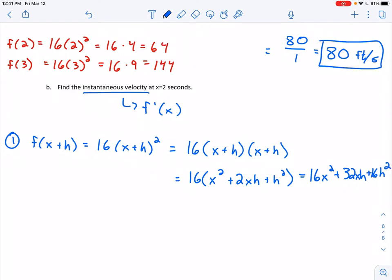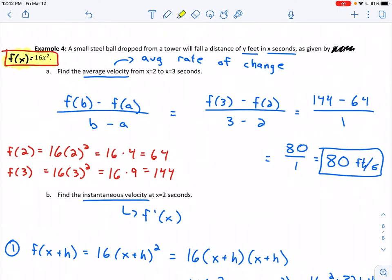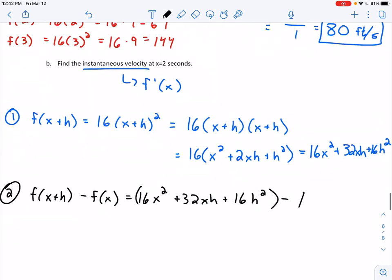Step two: subtract the original function. So f(x+h) - f(x). What we found last time was 16x² + 32xh + 16h², and I want to subtract the original function, which was 16x². So I subtract 16x². We should have some terms cancel out. The 16x² minus 16x² cancels, leaving me with 32xh + 16h².